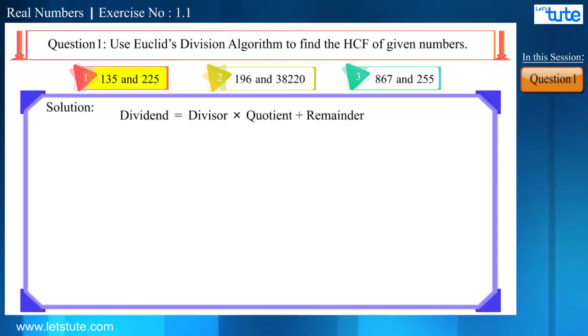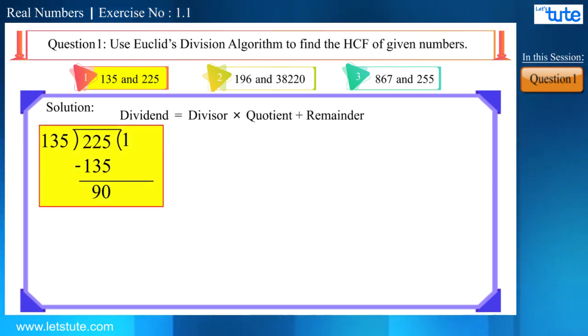Friends, now let's look at the first pair of numbers, that is 135 and 225. This number is smaller than this one. Let us write this in the division format. Now, 135 by 1 is equal to 135. On subtracting this, we will get 90, which is smaller than 135.